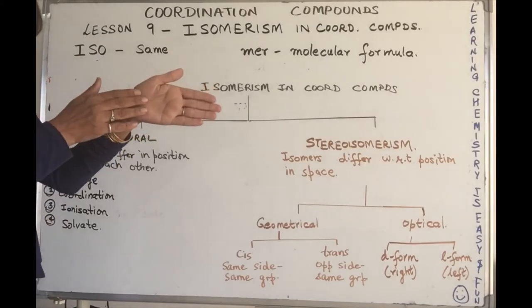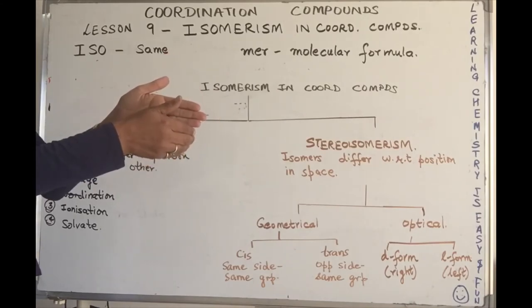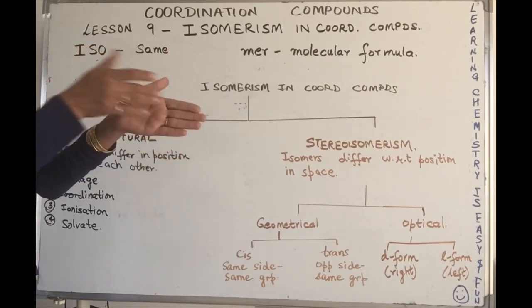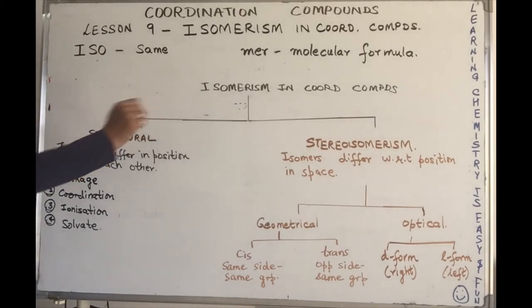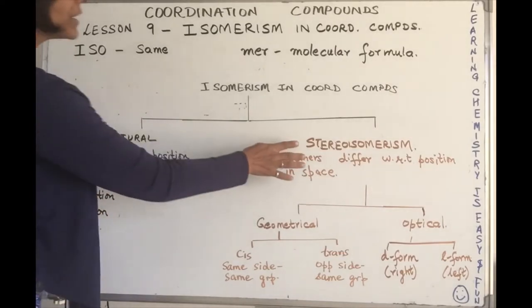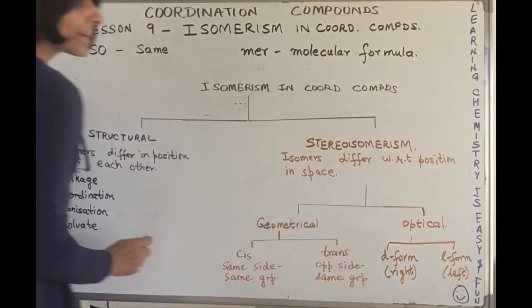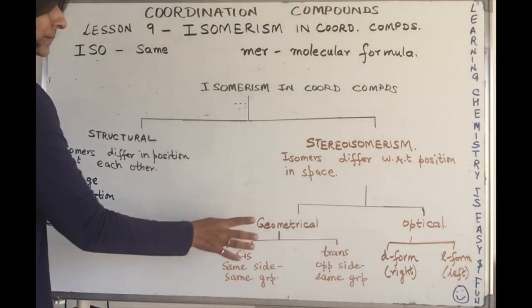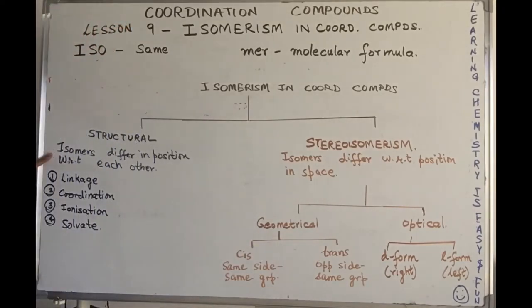So if I have a square planar complex, they can be on the same side of that complex or on the opposite side of the central line. Structural is divided into linkage, coordination, ionization, and solvate. Stereo is divided into geometrical and optical.